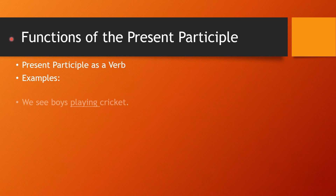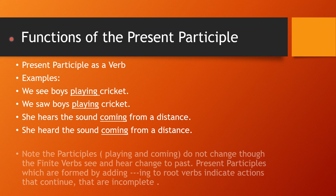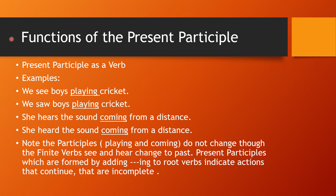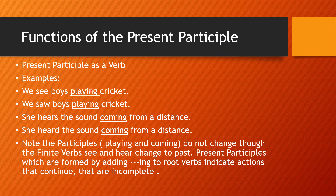Functions of the present participle. The present participle is formed by adding ing to the root verb. It functions as a verb and like an adjective. Examples: 'We see boys playing cricket.' / 'We saw boys playing cricket.' 'She hears the sound coming from a distance.' / 'She heard the sound coming from a distance.' Playing and coming are participles — they do not change even though the finite verb changes from present to past. Therefore they are non-finite verbs.